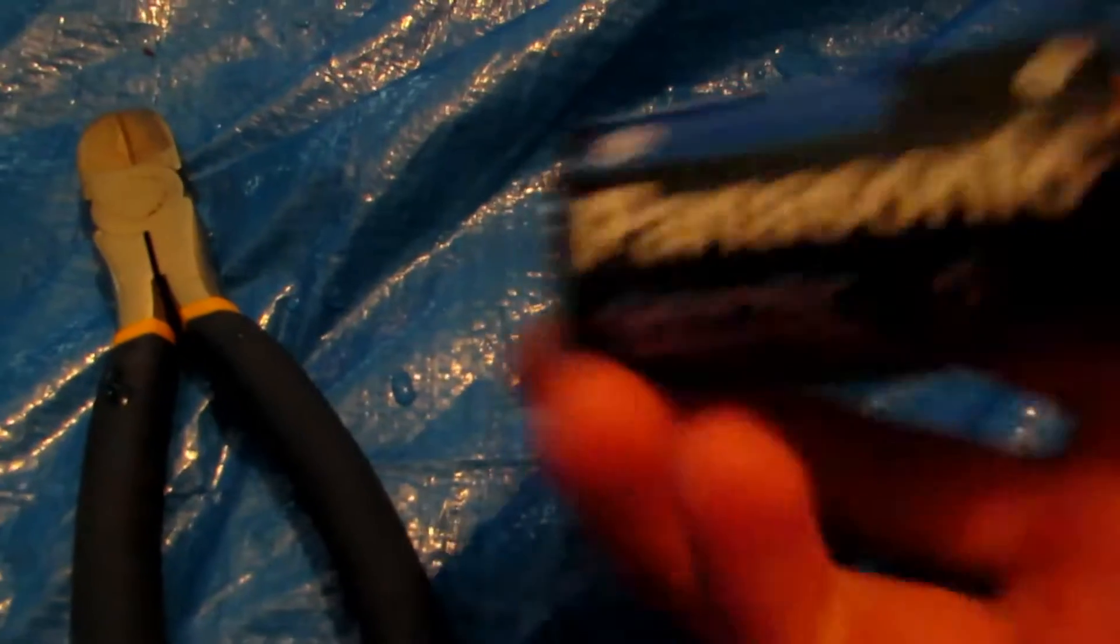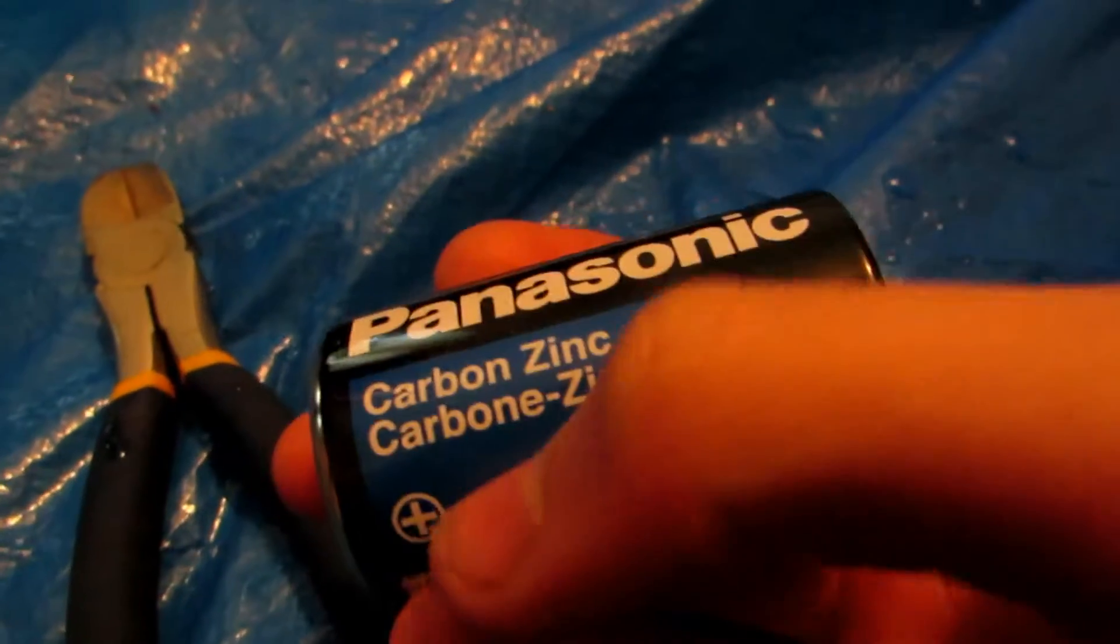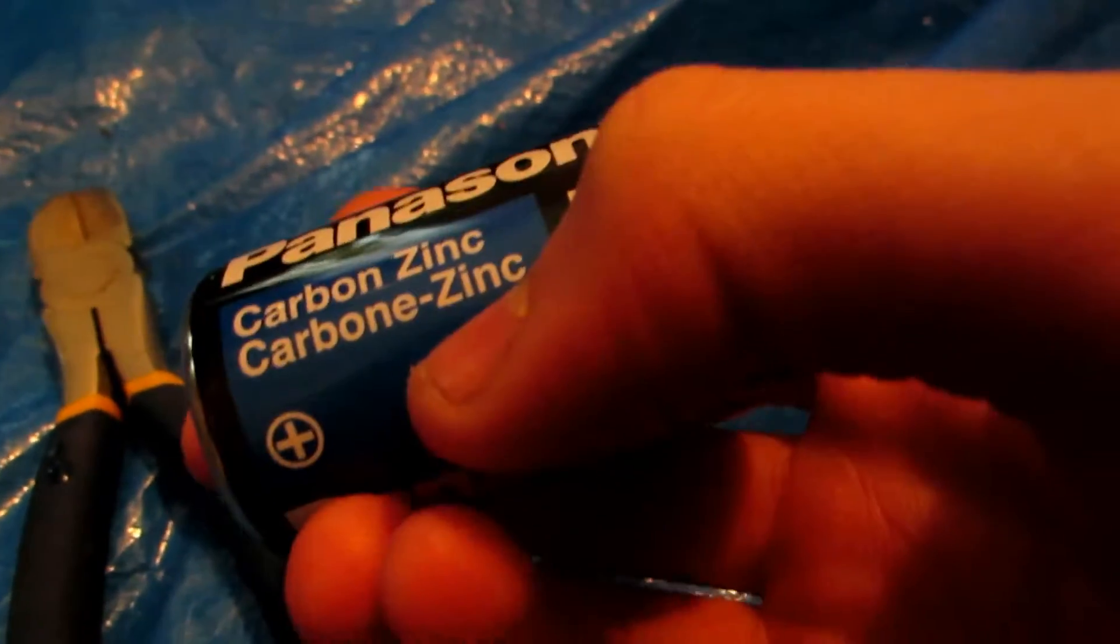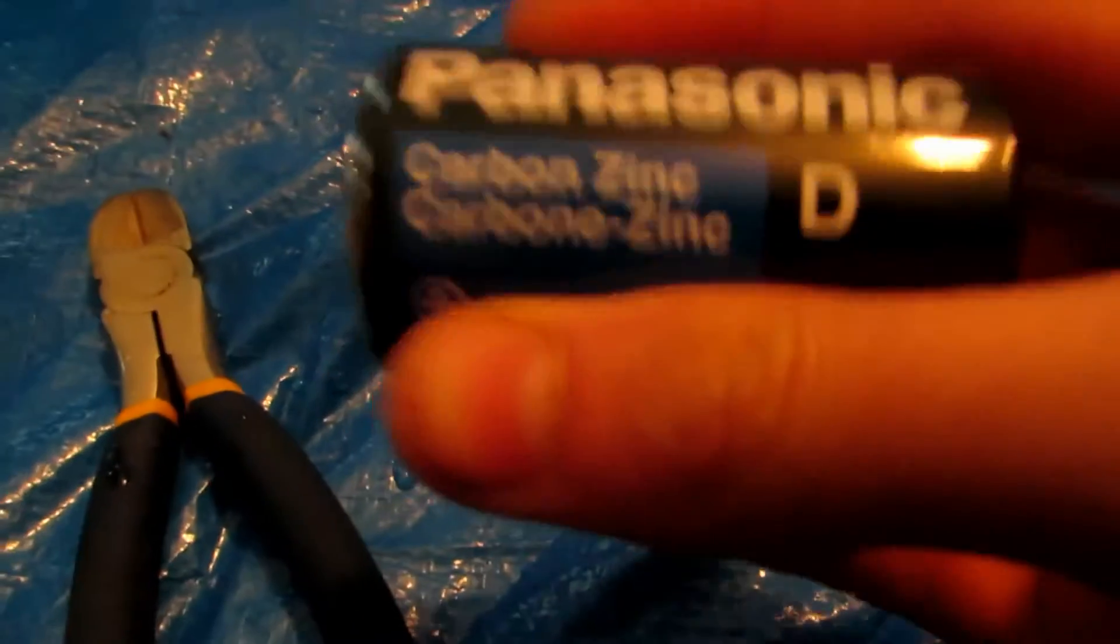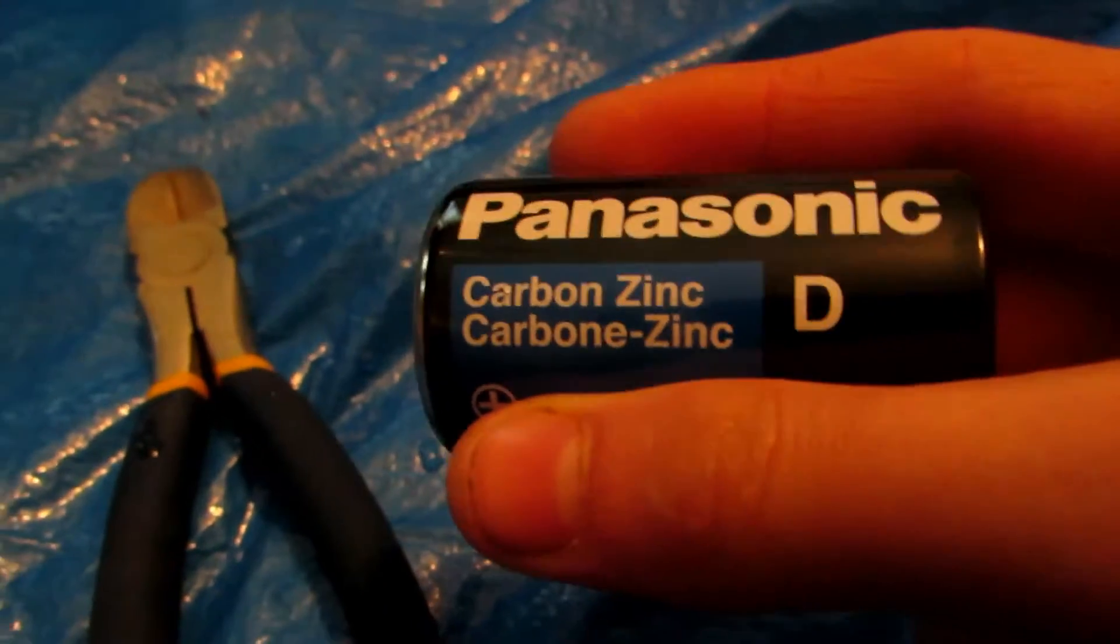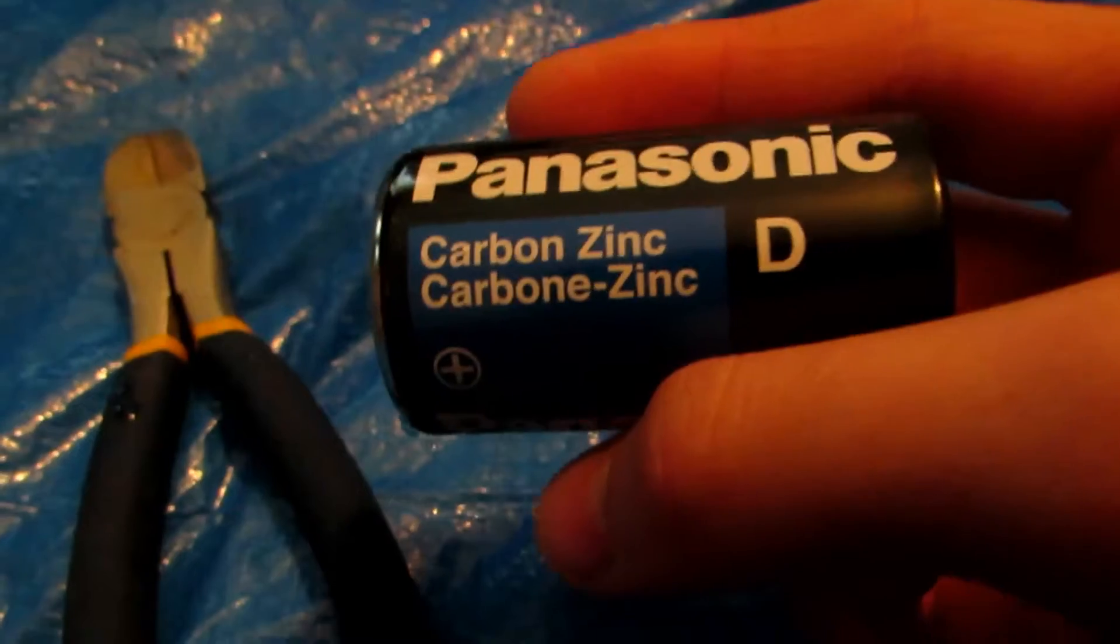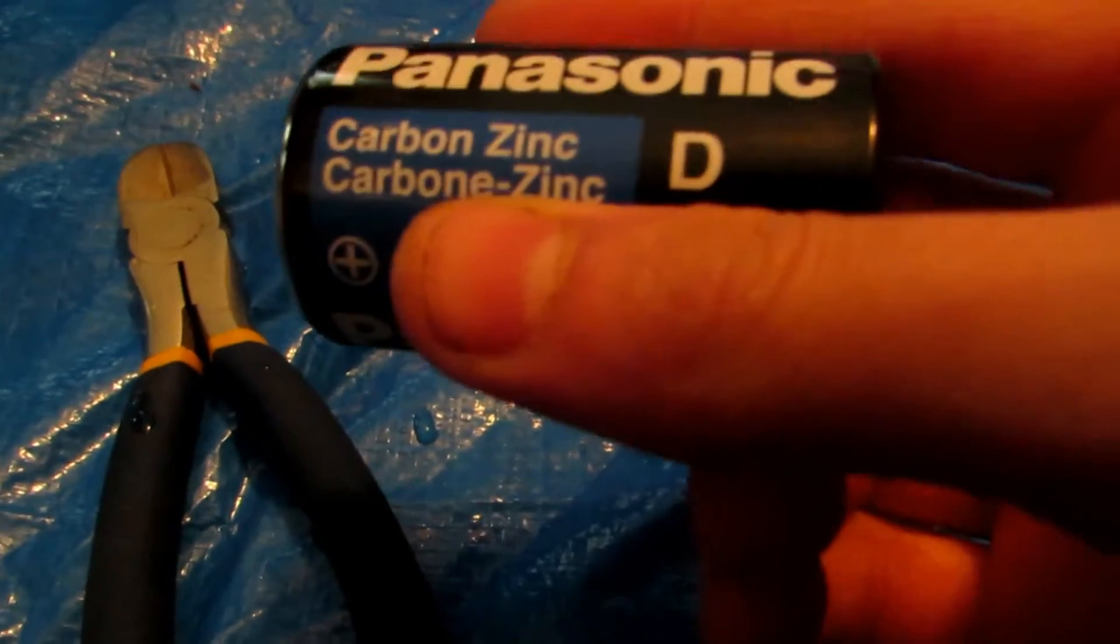Now carbon is commonly found in carbon zinc batteries. You can see it says carbon zinc right there. So you're going to want to find a battery that says this. If it says heavy duty or alkaline or anything, those are not carbon zinc batteries. Make sure it says carbon zinc on the casing.